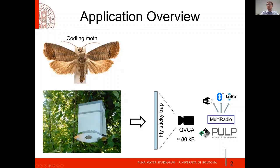We have a QVGA camera with 80-kilobyte images, a PULP-based system-on-chip, and a multi-radio transceiver that supports multiple protocols in parallel. We can support Wi-Fi, Bluetooth Low Energy, and LoRaWAN.